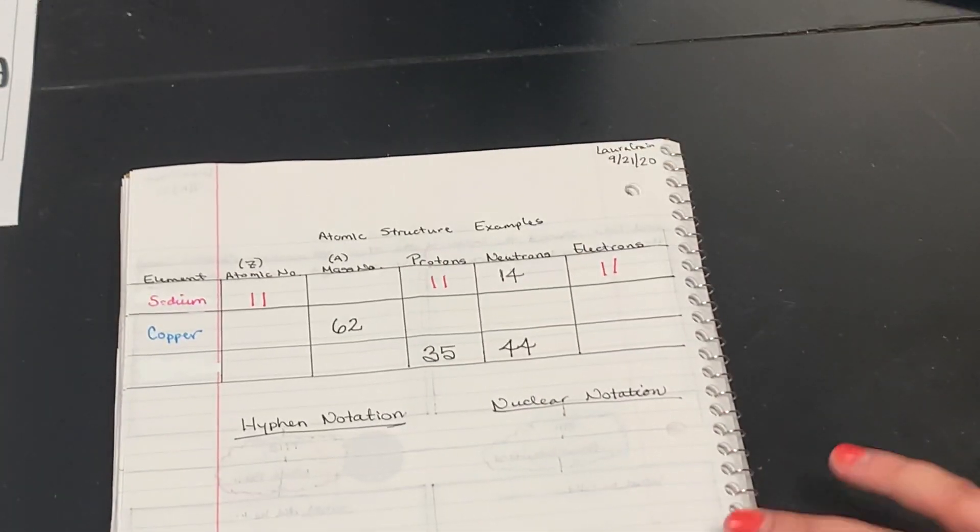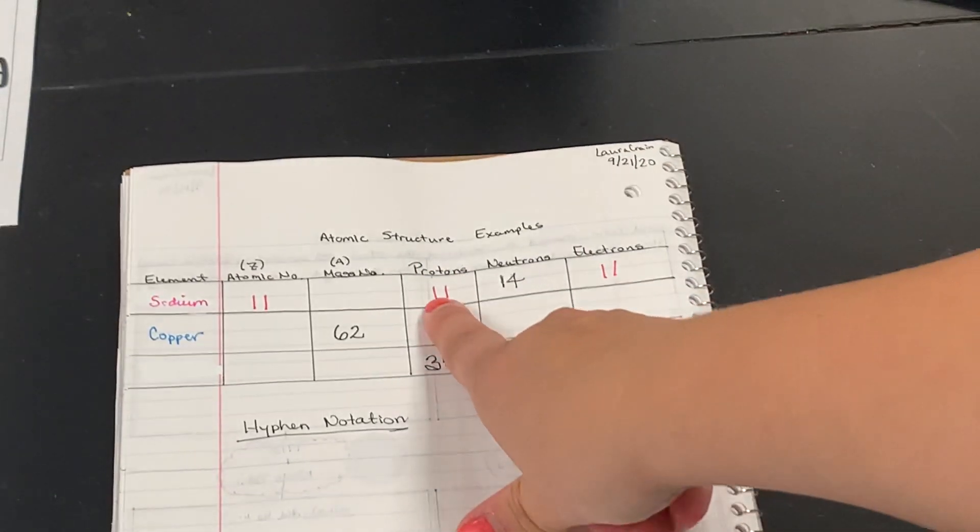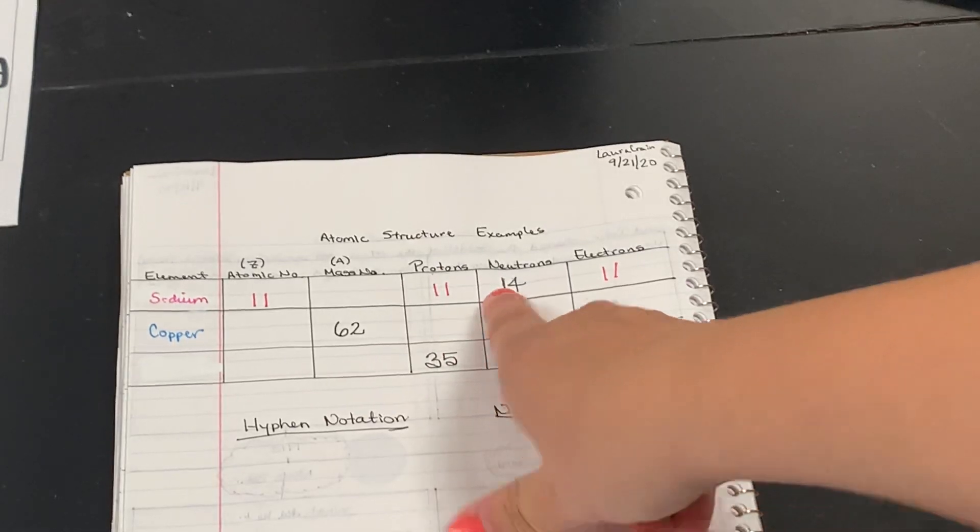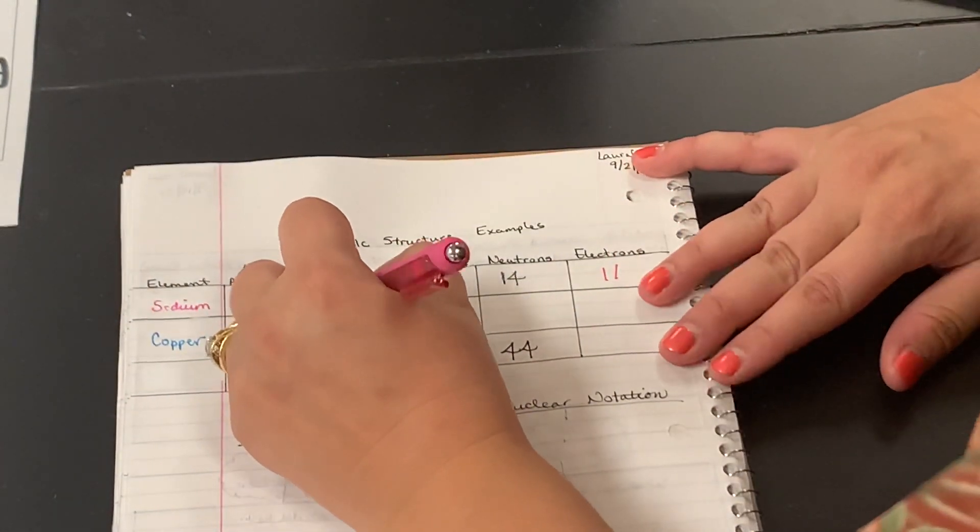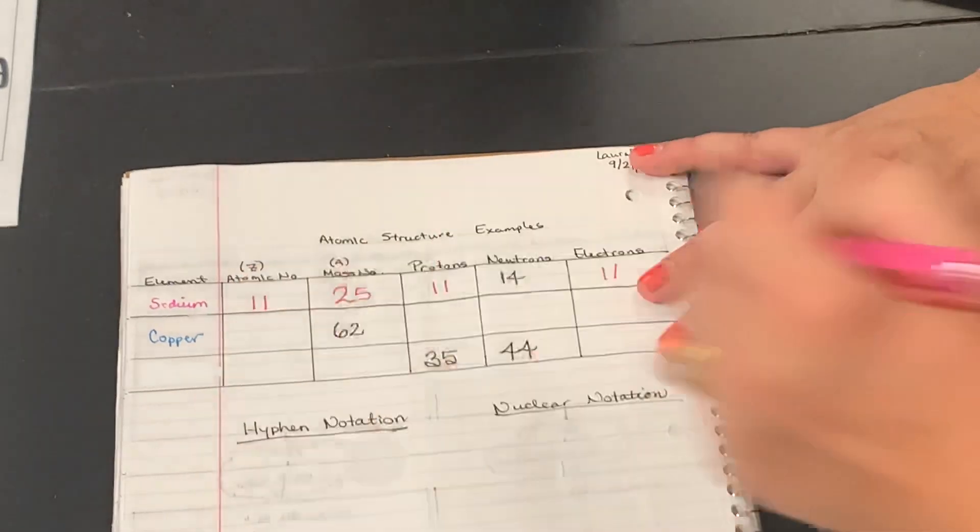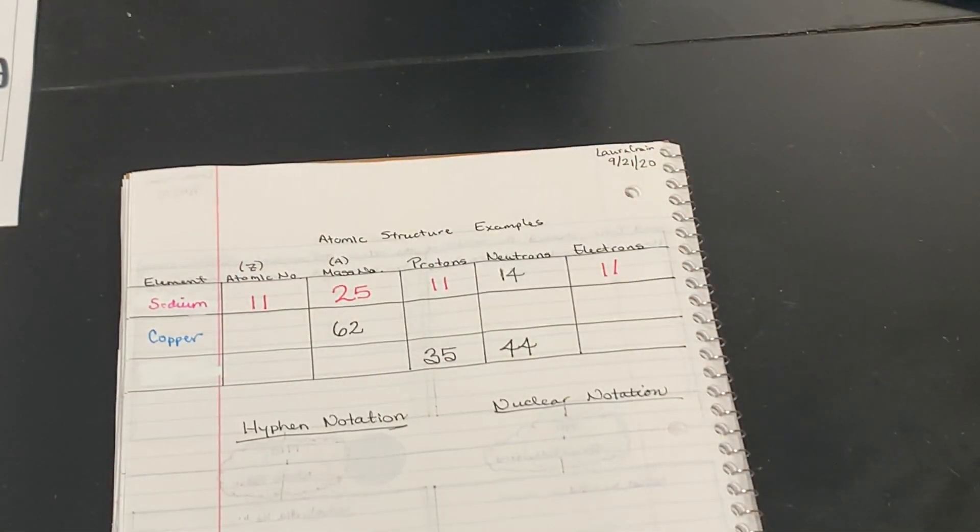So then to find the mass number, I'm going to take my protons plus my neutrons. So that's going to give me 25. So this is sodium with a mass of 25.